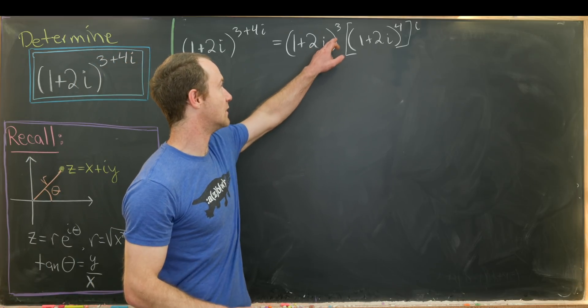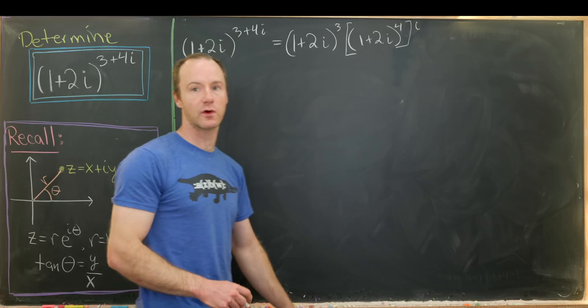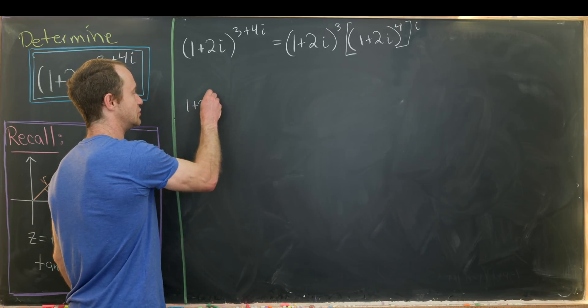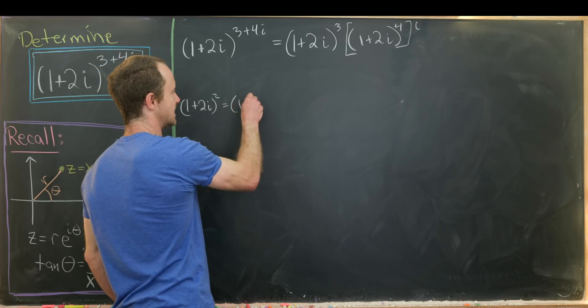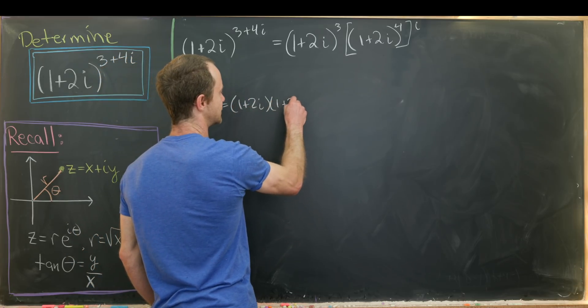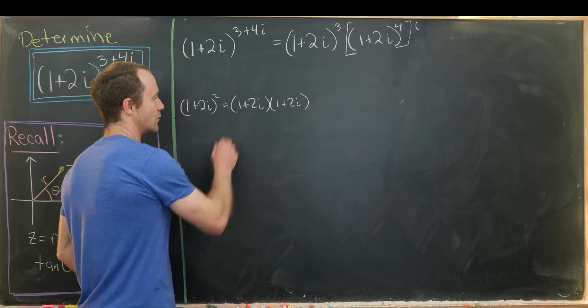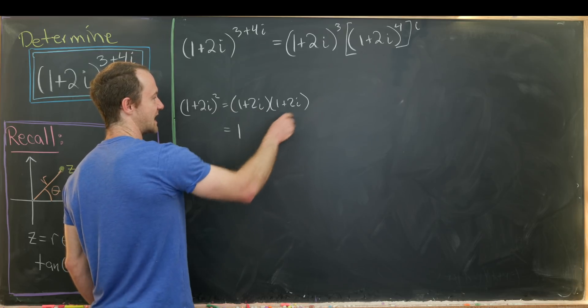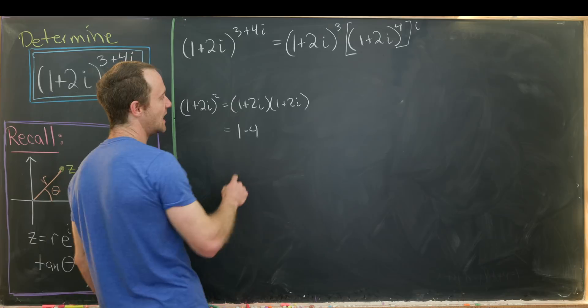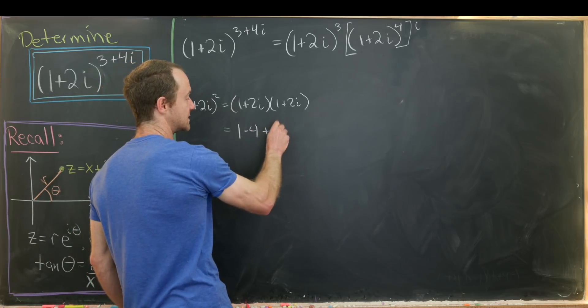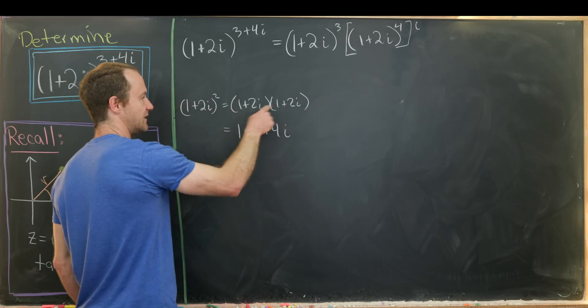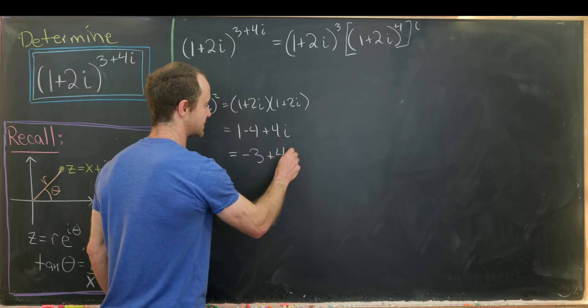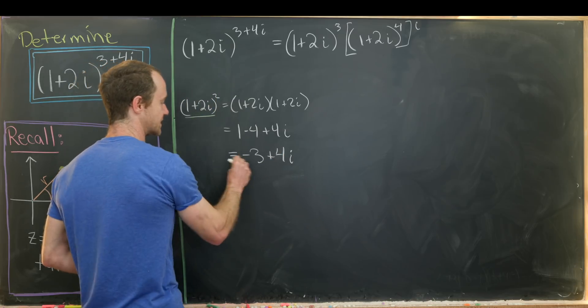Well, notice we're going to need 1 plus 2i cubed, as well as 1 plus 2i to the 4th. So we should probably calculate some powers of 1 plus 2i. So let's start with 1 plus 2i squared, which we can just get by multiplying it out. So that's 1 plus 2i times 1 plus 2i. We have 1 times 1 is obviously equal to 1. 2 times 2 is equal to 4, but it's attached to i squared. So that's going to be minus 4. And then we'll have 4 times i. That comes from the 2i times 1 and the other 2i times 1. So putting this all together, we see that this is negative 3 plus 4i. So that's our 1 plus 2i squared.